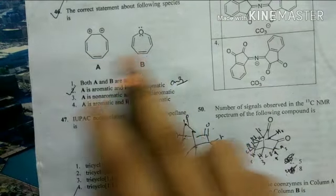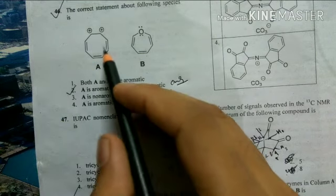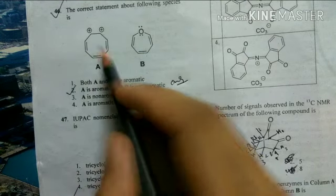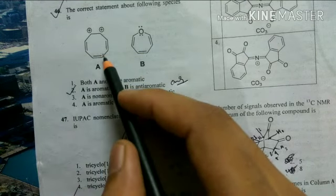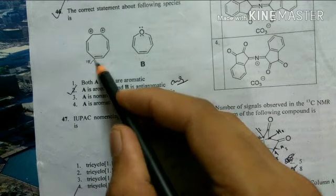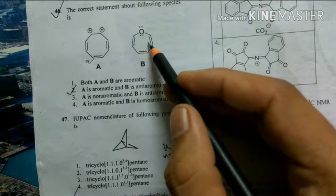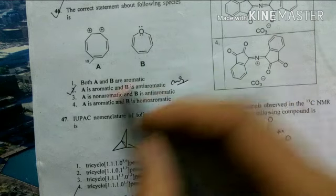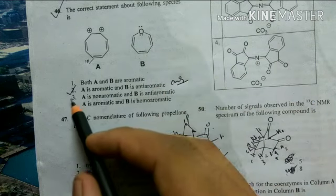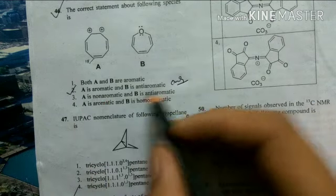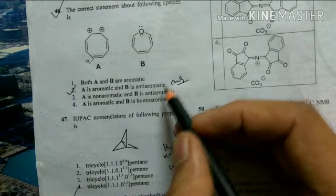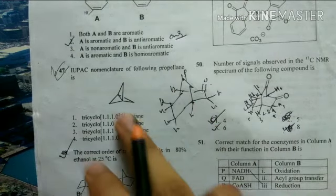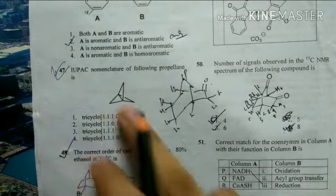For aromaticity prediction: the first compound has a 4n+2 π-electron system, is fully conjugated, and is planar — so it is aromatic. The second compound has 8 π electrons (4n system), making it anti-aromatic. So option 2 — A is aromatic and B is anti-aromatic — is the correct answer.